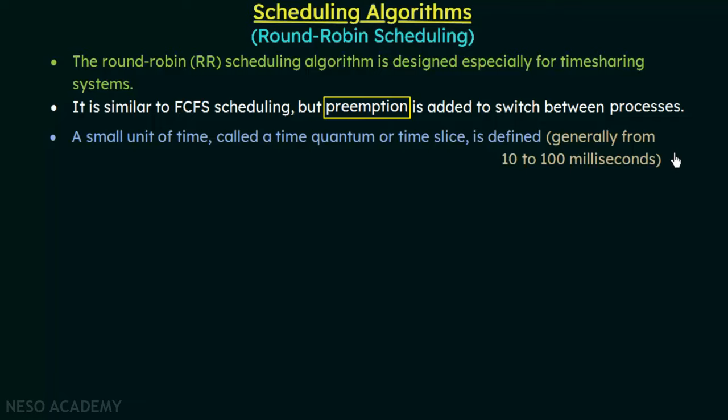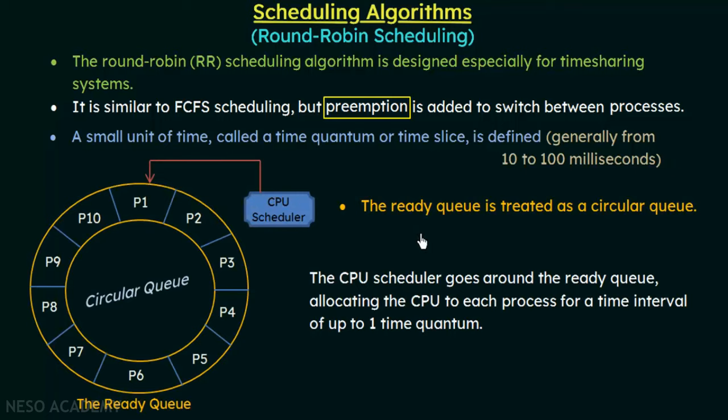Whether the CPU burst of the process is greater than the time quantum or not does not matter — this specific time quantum is assigned to each process, and a process will be allowed to execute only for that particular time quantum in the first round. After that, the CPU is given to the next process in the queue, which also executes for that time quantum, and so on. The ready queue is treated as a circular queue, and the CPU scheduler goes around it allocating the CPU to each process for a time interval of up to one time quantum.